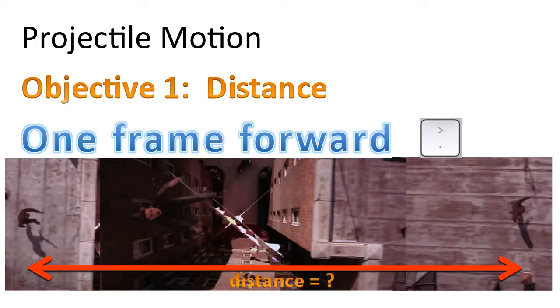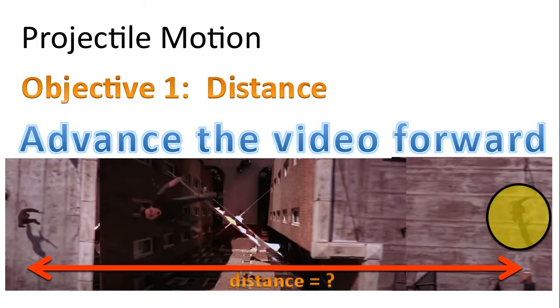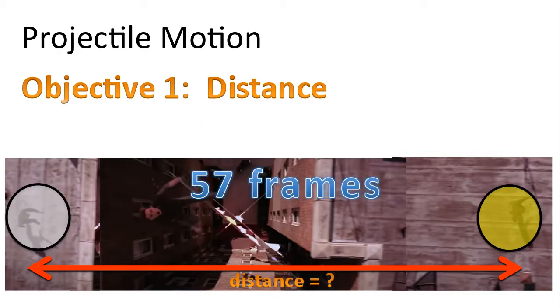I then begin pressing the period key. Every time I press the period key the video advances one frame at a time forward. And I keep doing this until spider-man lands. That landing position is highlighted yellow. Now in total when I did this I pressed the period key 57 times, in other words there was 57 frames from when spider-man took off to when he landed.